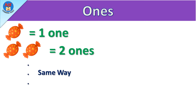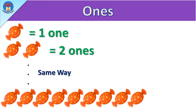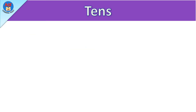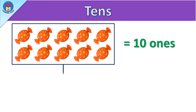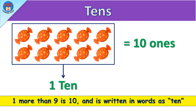Same way, now we have nine candies, means nine ones. Tens: here we have ten candies, means ten ones. A group of ten ones is called as one ten. One more than nine is ten, and is written in words as ten.